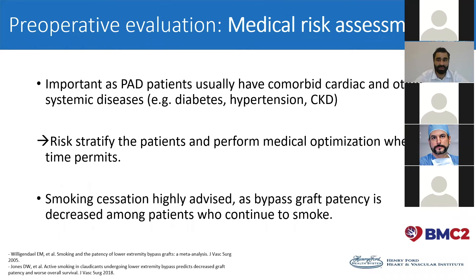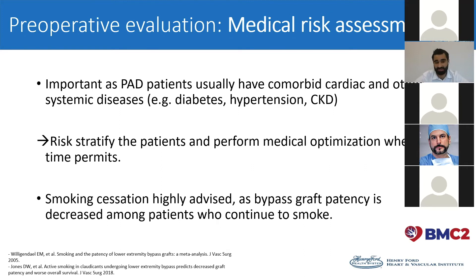When going forward to the medical risk assessment, it's very important to assess the comorbidities, because PAD patients usually have a lot of comorbidities such as diabetes, hypertension, and CKD. It's important to stratify patients and try to optimize them if time permits. It's important to advise smoking cessation, because it has been shown that patients who smoke have decreased graft patency with time.